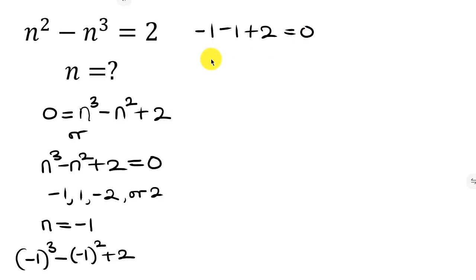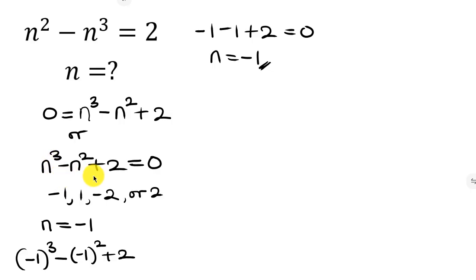That equals zero — it works! So n = -1 is a solution. Because the degree of our original equation is 3, there can be up to three different solutions. To find the other two, we'll use synthetic division.